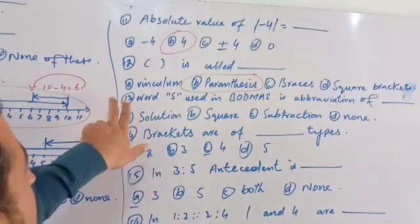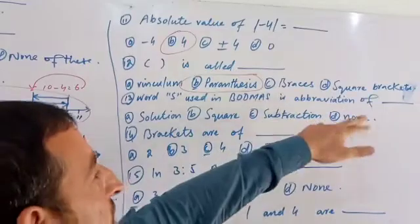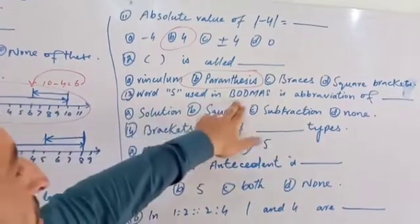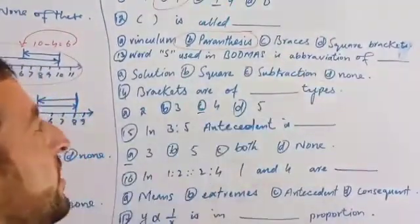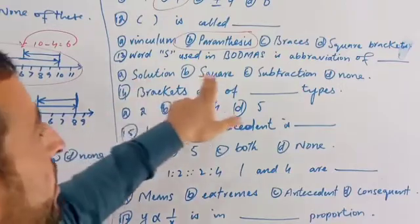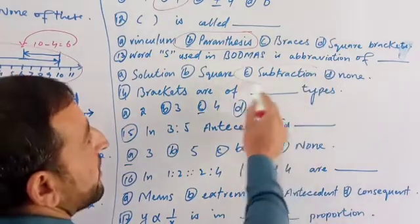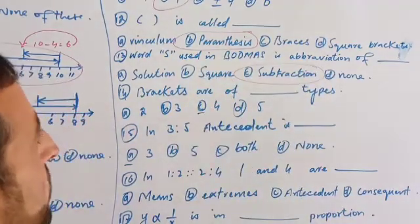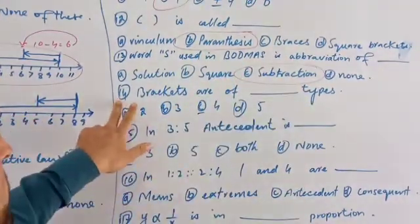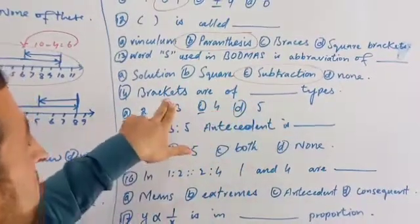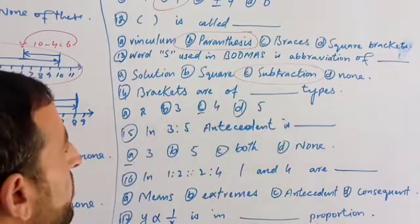BODMAS is an abbreviation. The letter S is the abbreviation for subtraction. The S is subtraction. The full form is: Brackets, Order (or Division), Multiplication, Addition, and S for Subtraction. The brackets are of types — under the spines of 2, 3, 4, and 5. The brackets are under 4.